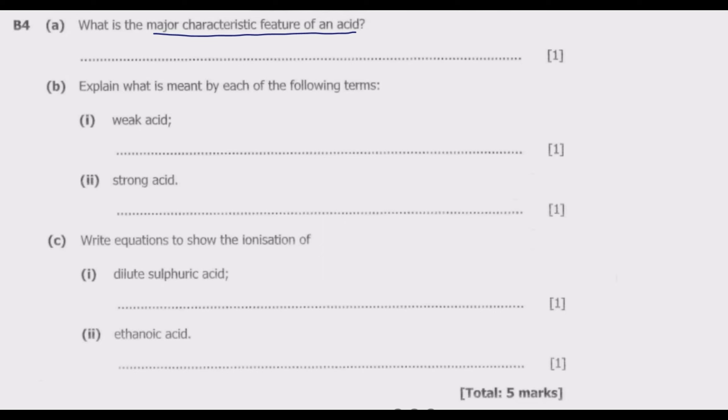We look at question B4B: Explain what is meant by each of the following terms. A weak acid is basically an acid that partially ionizes in water. Ionization is the process by which neutral molecules split into ions in water.